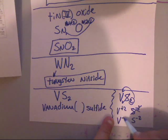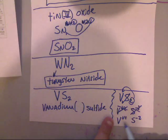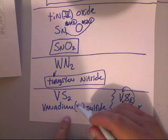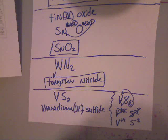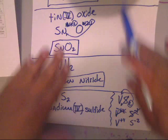This means that this should be a 4, because you've got to double it. So really what you have here is vanadium(IV). So that's vanadium(IV) sulfide.